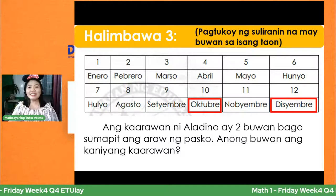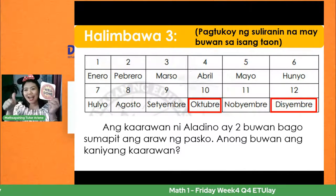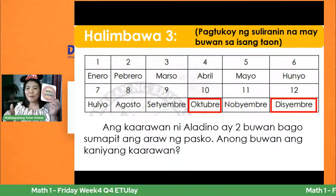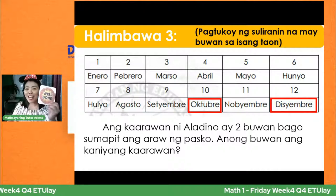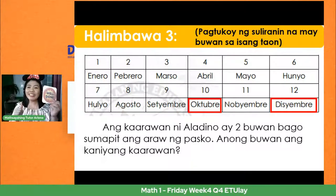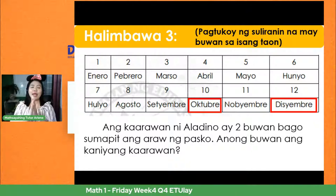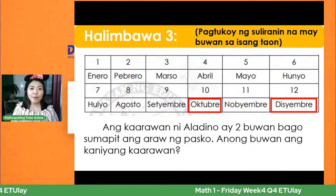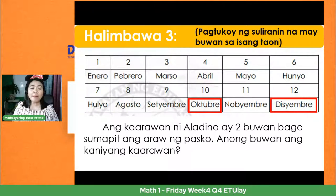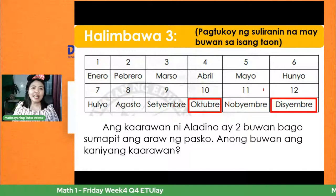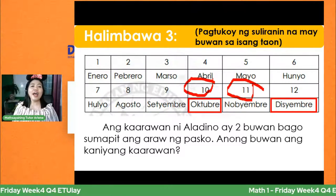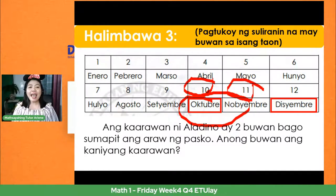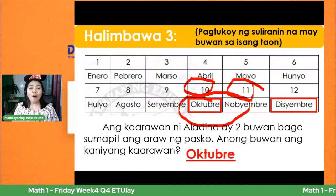Tama! Well done — badge para sa mga nakakuha ng tamang sagot. Sabi din ni Matthew, ni May, ni Mylyn, ni Charlie, ni Riona, ni Maria, ni Rosemary, at ni Jersey. Ang sabi kasi ay 'bago' — ibig sabihin before December, babalik tayo ng dalawa. Isa, dalawa — at ito ay pumatak sa Oktubre. Ibig sabihin, ang birthday niya ay buwan ng Oktubre.